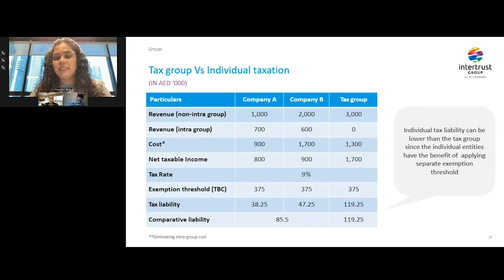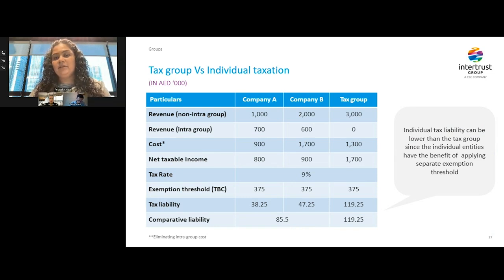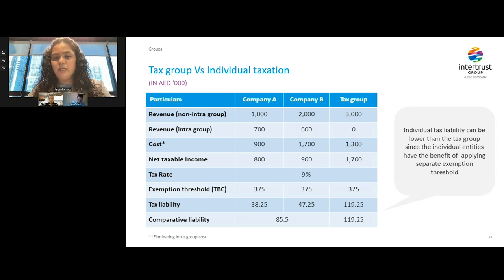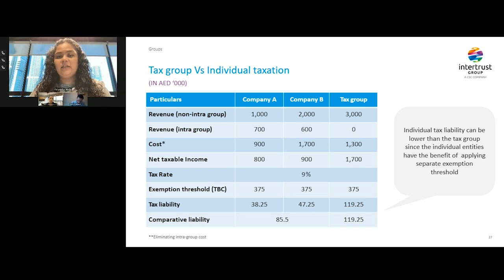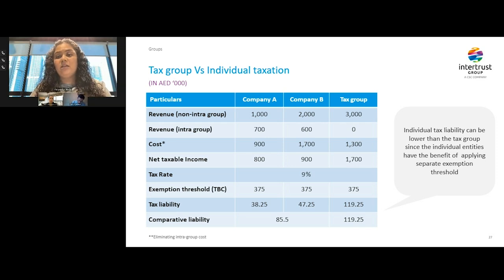Comparing when a company forms a tax group versus individually filing tax returns: when companies file individually, their combined tax liability is actually lesser than when filing as one tax group. This is mainly because the benefit of the 375,000 dirham threshold applies to the group as a whole, whereas for individual filings it applies to each individual member. That is why the liability for a tax group comes to a higher number than when done at individual level. Tax grouping can, however, be beneficial when there are loss-making companies in the group.